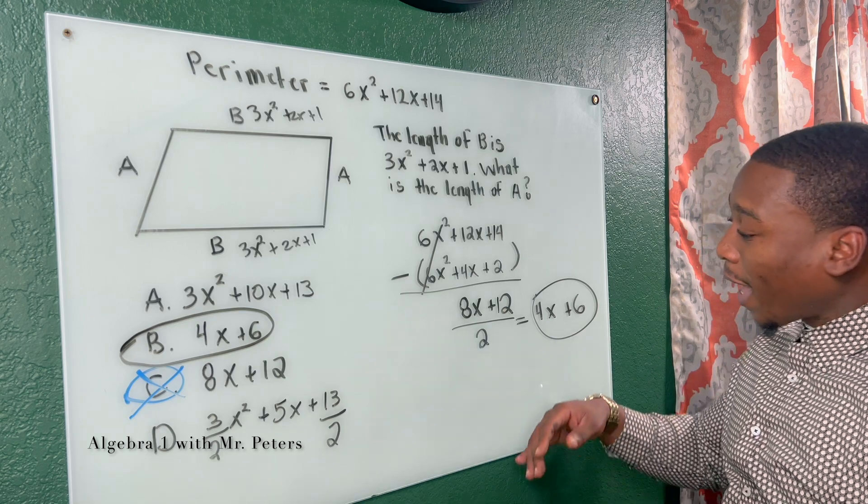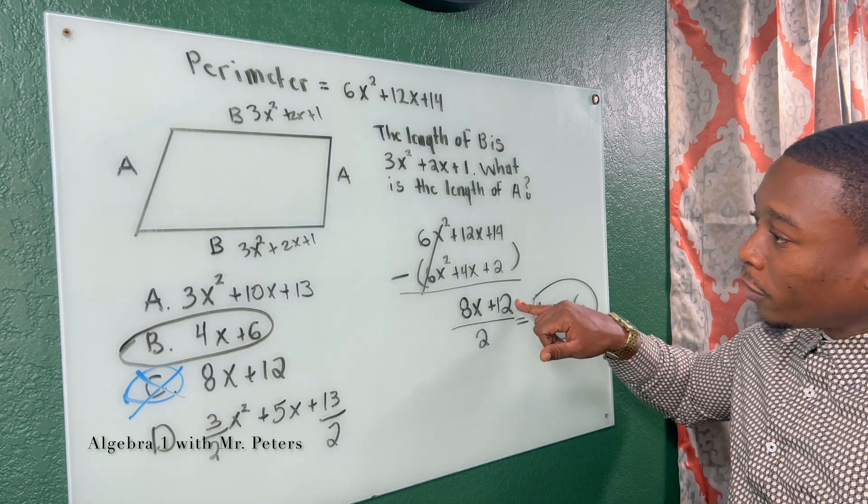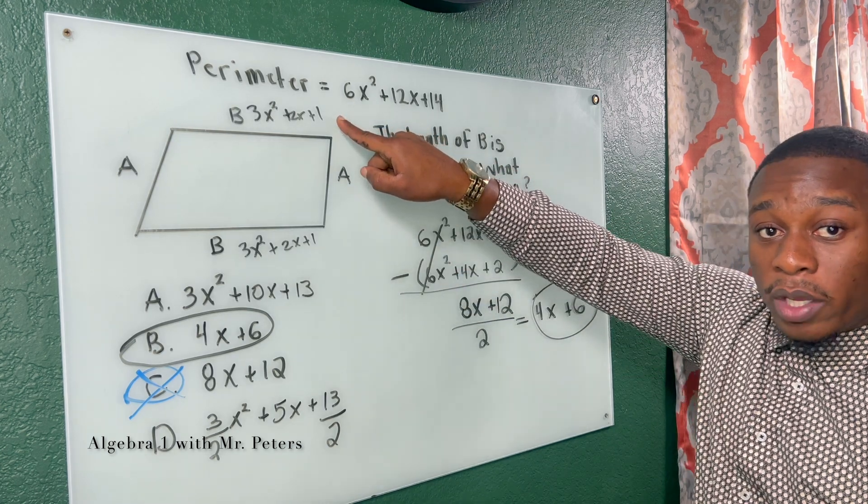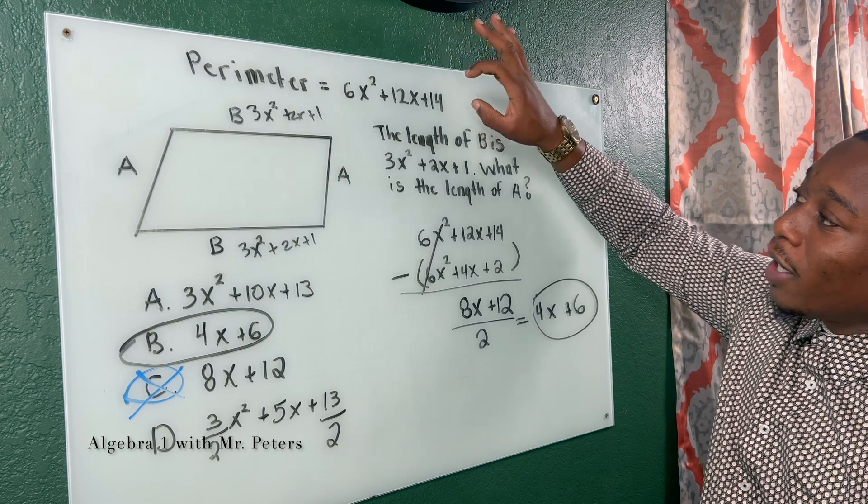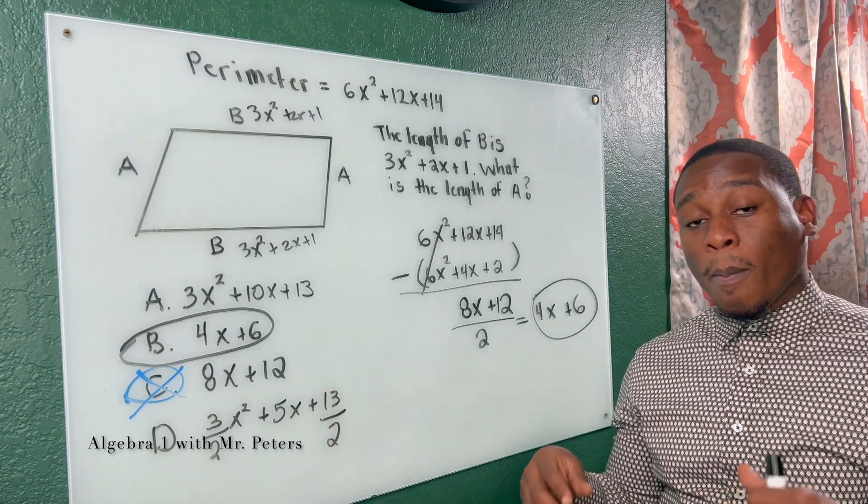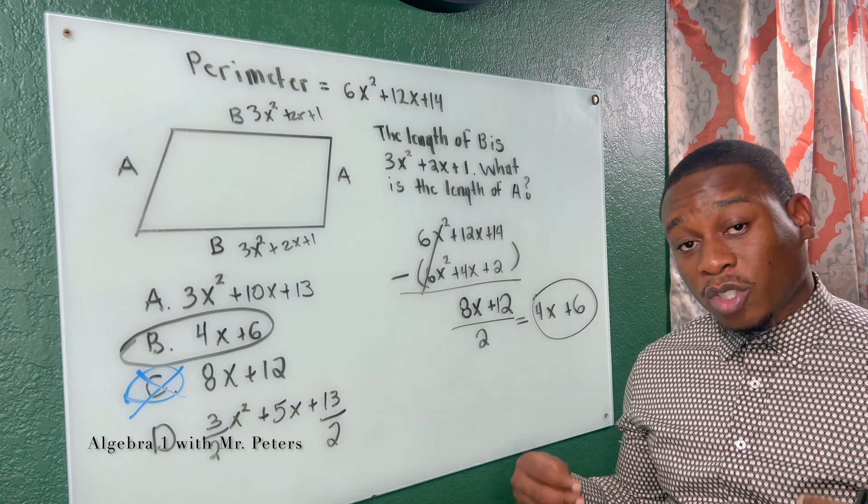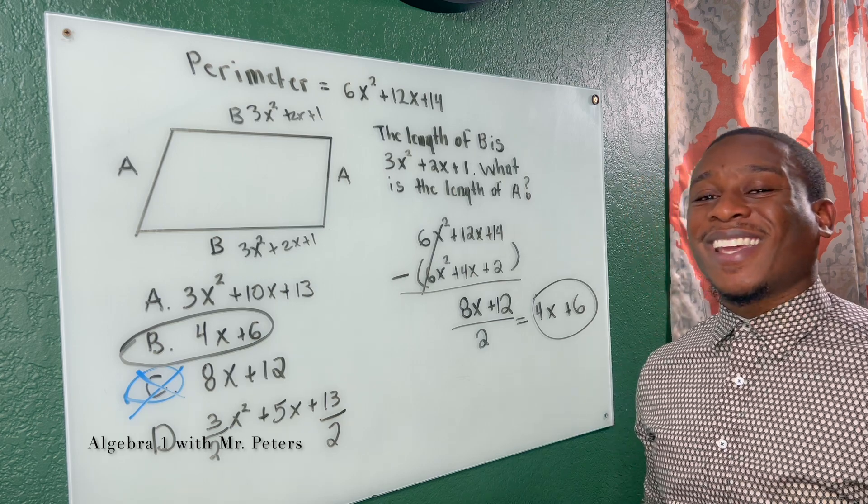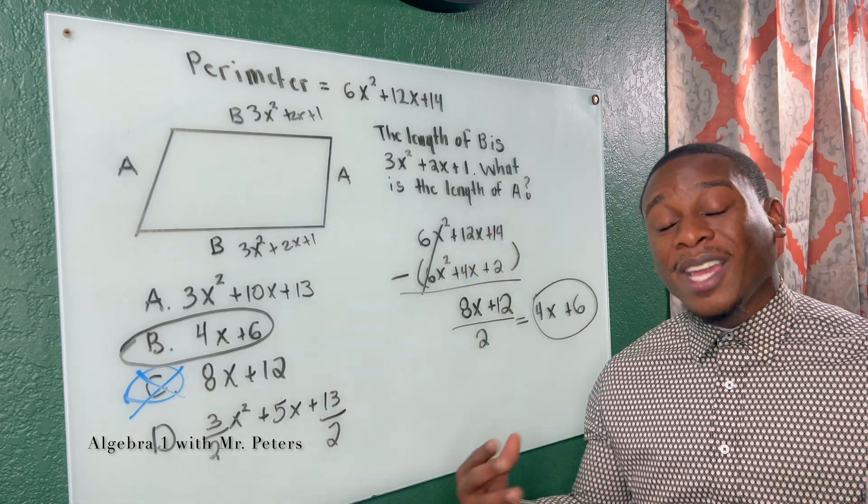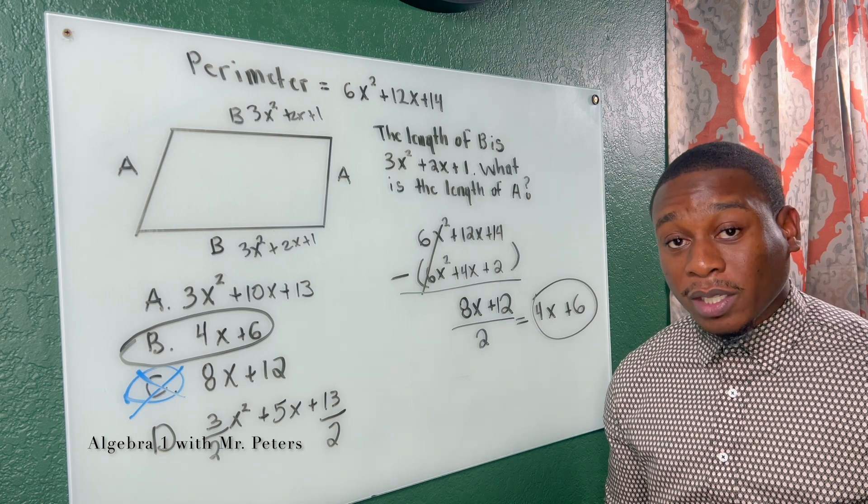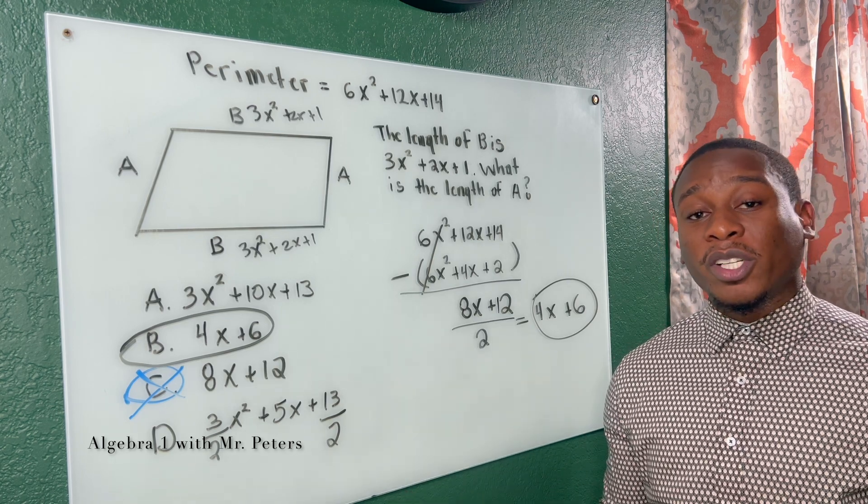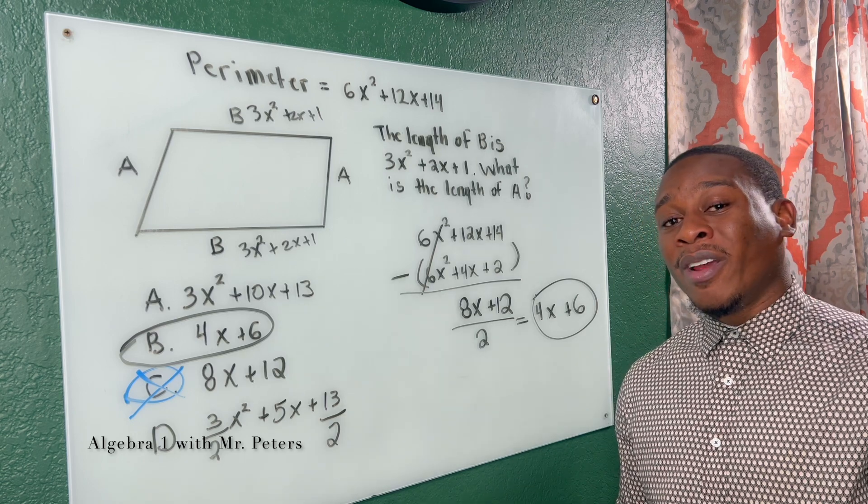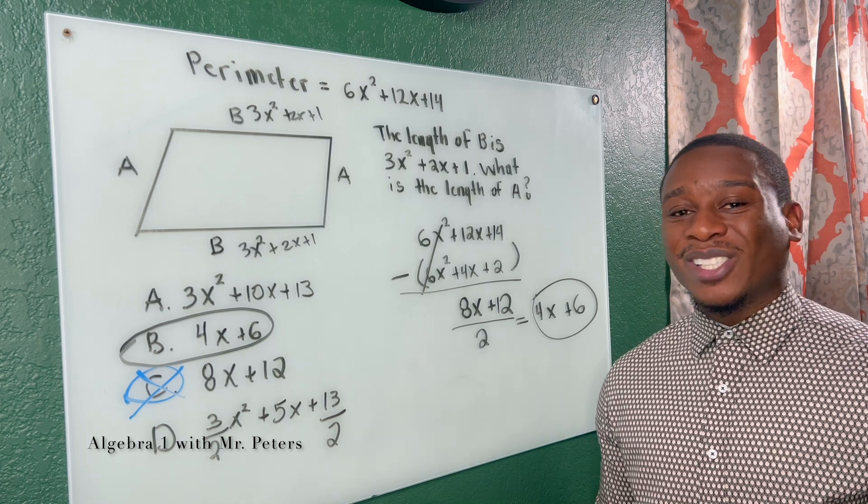Now think about it. Once we add 8x + 12, plus 3x² + 2x + 1, and then we add 3x² + 2x + 1, we're going to get this perimeter as an answer. So please don't fall for this trick. Remember that congruent sides are the same. So when you get your answer, you're probably going to have to divide it by 2. And with that being said, our video is over for today. We thank you guys so much for joining Algebra 1 with Mr. Peters. Smash the like button, subscribe to our channel, and leave comments for future videos you guys would like to see on our channel. Or if you had a question from today's video, thank you guys so much for joining us.